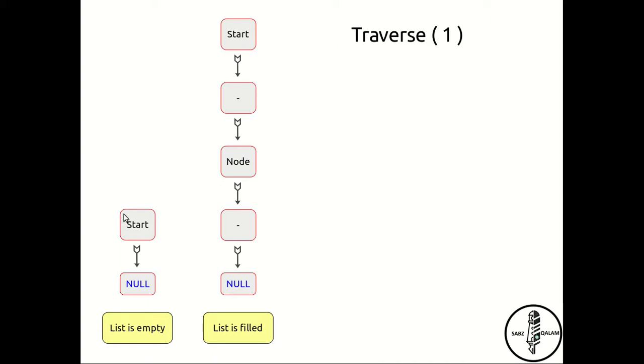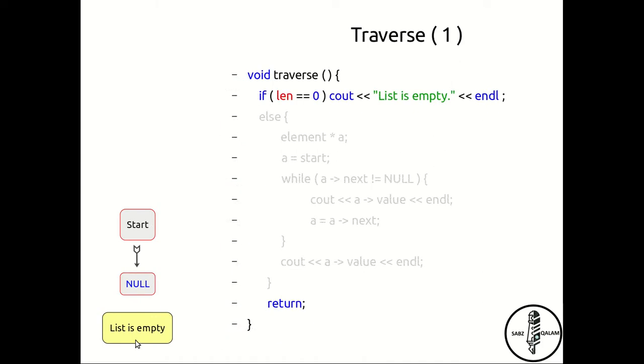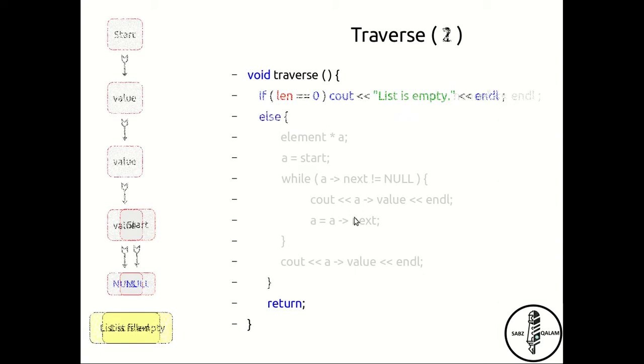The first is how do you traverse a linked list when it is empty, and then how do you traverse a linked list when it is not empty. So there are really two options you need to program. First, how do you traverse when the list is empty? Well, you don't. If the length is equal to zero, you can simply print 'the list is empty' and then just exit.